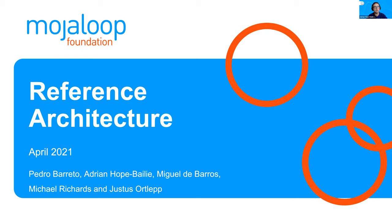At the end of the last PI, we agreed that we would have a reference architecture and feature baselining stream. And what we're going to present is the output of that stream today, as well as some conclusions on where we want to take this work.